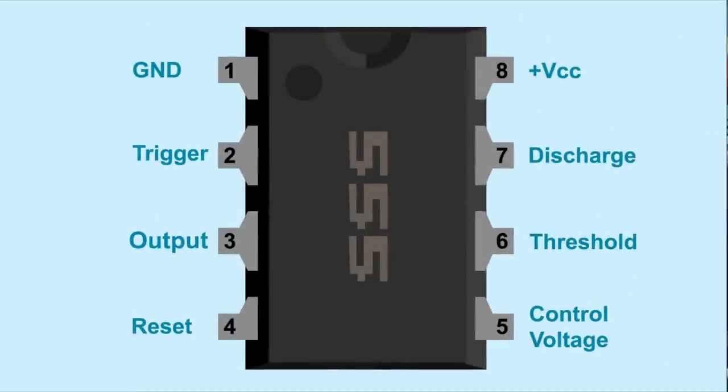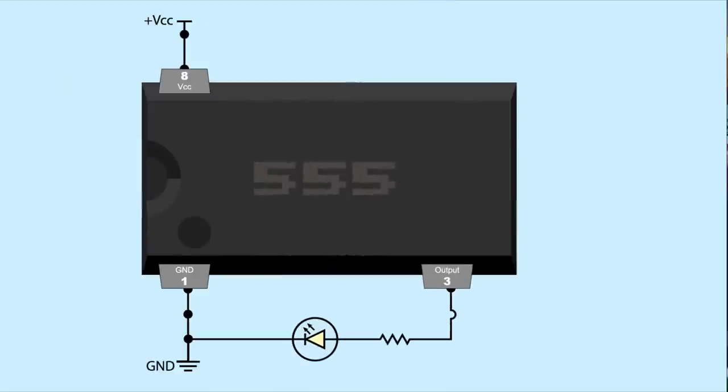Pin 3 is the output. With an LED connected to the output, when output is high, the LED would be on. When the output is low, the LED would be off.